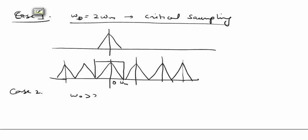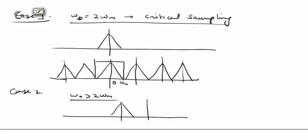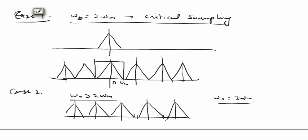Case two: if omega_naught is greater than omega_m, this is the case of oversampling. For example, using omega_naught equals 3 omega_m, there is sufficient space between the samples for a non-overlapping pattern, and we can easily reconstruct the signal with an appropriate low pass filter. Case three is undersampling, where omega_naught is less than twice omega_m.